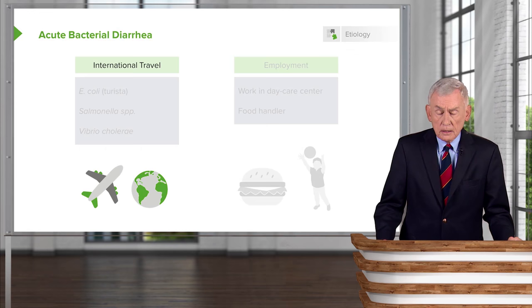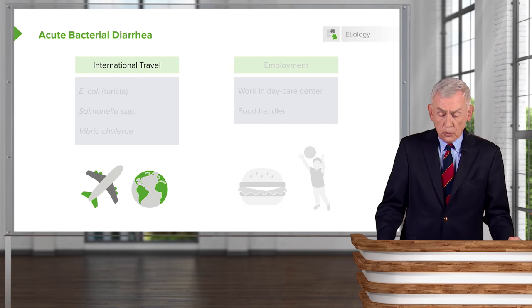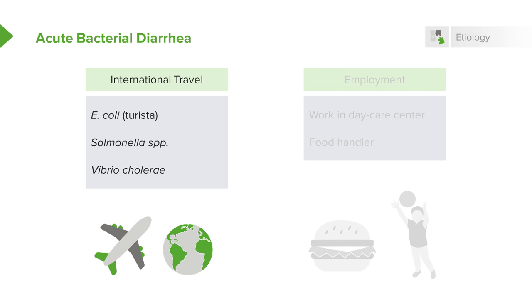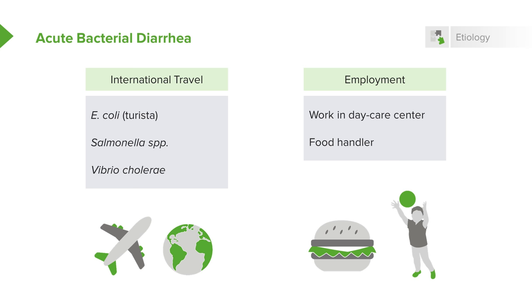As for the causes of acute bacterial diarrhea, if you're talking about international travel, we're talking about E. coli — the cause of turista, sometimes called Montezuma's revenge or the green apple quick step. As one colleague says, travel broadens the mind and loosens the bowels. It's also a problem in people who work in daycare centers and obviously among food handlers.